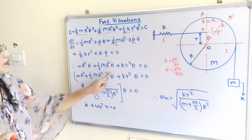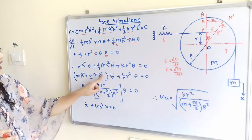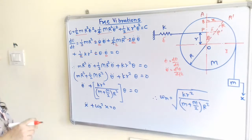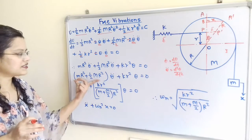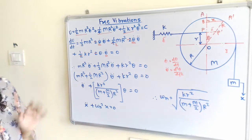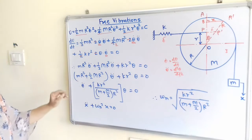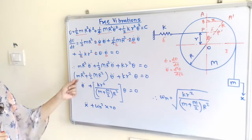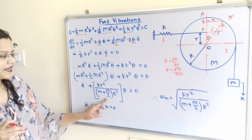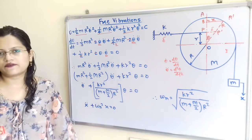Taking θ̈ as common: (m·R² + (1/2)·M·R²)·θ̈ + K·r²·θ = 0. Dividing through by the coefficient of θ̈, and noting R² is a common factor: θ̈ + [K·r² / (m + M/2)·R²]·θ = 0.